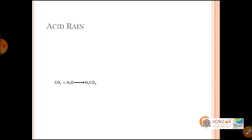Acid rain occurs when rain becomes acidic due to poisonous gases present in the atmosphere from air pollution. Harmful gases like sulfur dioxide, carbon dioxide, and carbon monoxide are released from factories and vehicles. These gases react with water to form various acids, which come down as acid rain. Acid rain is harmful to living organisms — it disturbs aquatic life, causes skin problems, and damages soil pH.